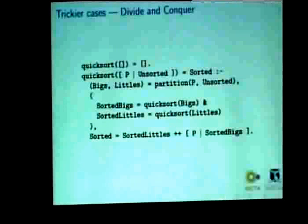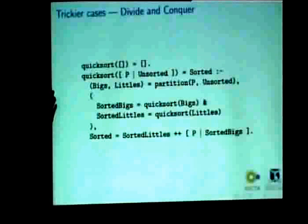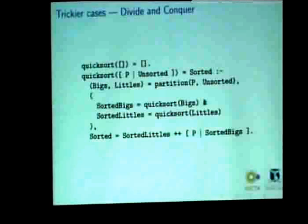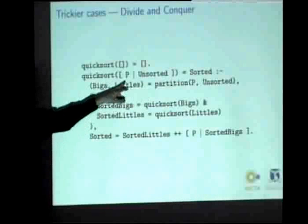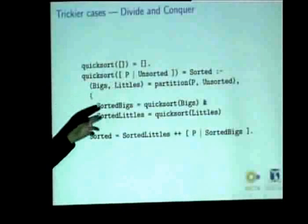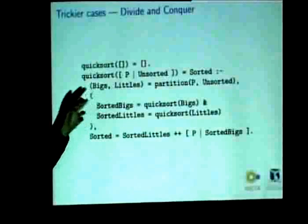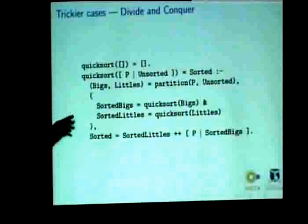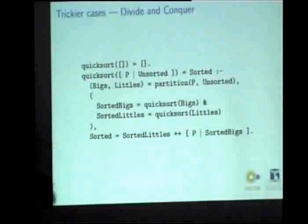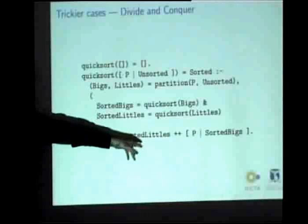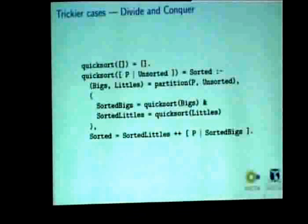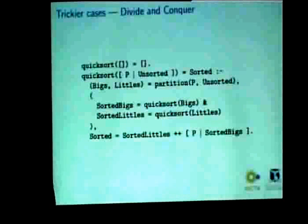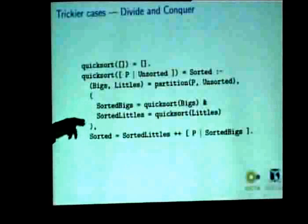This is the quicksort algorithm. I trust everybody knows the quicksort algorithm, or has seen or heard of it before. Simply, quicksort partitions the list around a pivot item, producing a list of big elements and a list of small elements, and then sorts each of those before appending the lists with the pivot element back together to return the result.